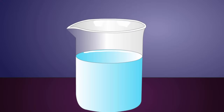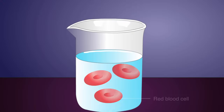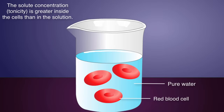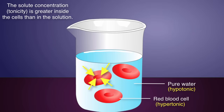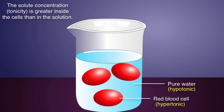To demonstrate how tonicity affects a cell, let's place some red blood cells into a beaker containing pure water. In this case, the solute concentration is greater inside the cells than in the surrounding water. In other words, the contents of the cells are hypertonic in relation to the hypotonic contents of the beaker. Because of this, osmotic pressure results in the diffusion of water across the membrane and into the cells. Over time, if enough water enters the cells, the cell membranes may burst. This is called lysis.